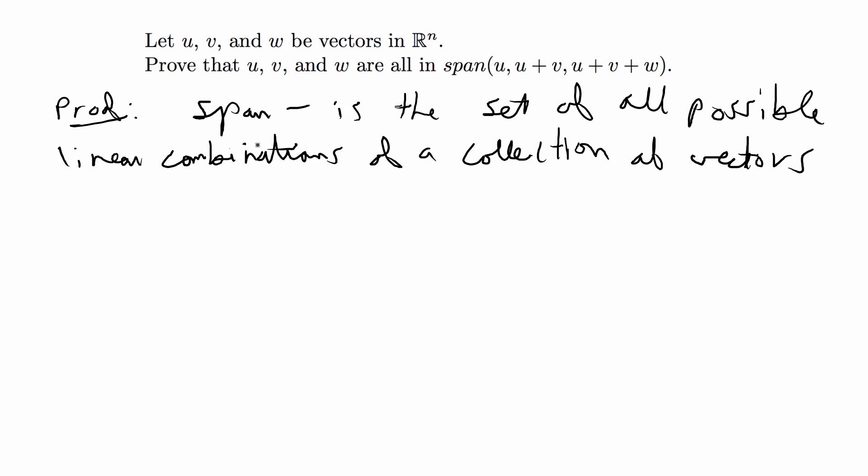Let me write that out. Sorry for the messy handwriting, but a span is basically just the set of all possible linear combinations of a collection of vectors. In this case, we're given three vectors.